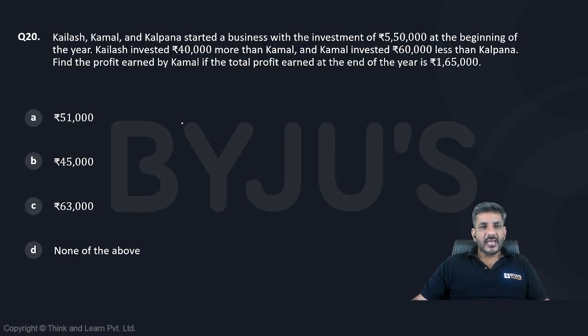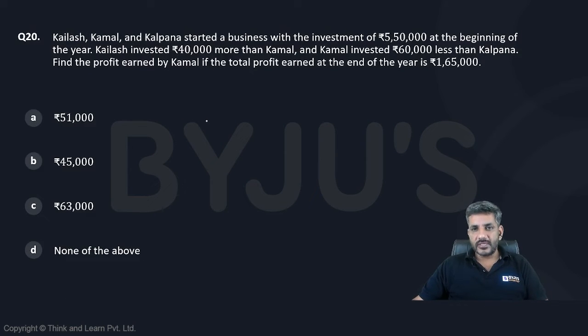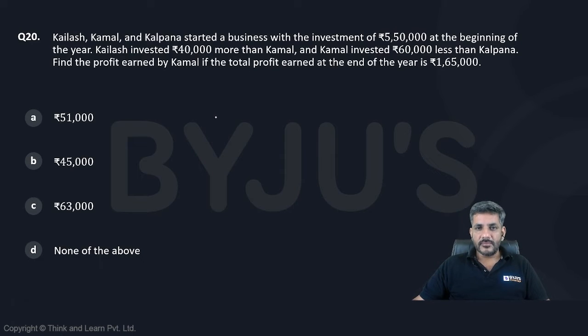This question says: Kailash, Kamal, and Kalpana started a business with the investment of 550,000 at the beginning of the year. Kailash invested 40,000 more than Kamal and Kamal invested 60,000 less than Kalpana.